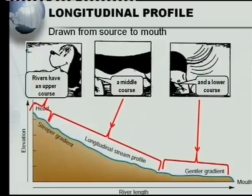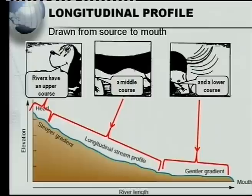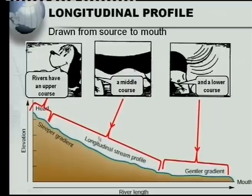What's very important about the upper, middle and lower course is velocity — the speed at which the water flows. In the upper course, up in the mountain, there is a very steep gradient, so we expect the water to flow much faster, with higher velocity. The gradient becomes more gradual in the middle course, so the river flows slower, and at the lower course we get the most gentle gradient, so the river flows at its slowest.